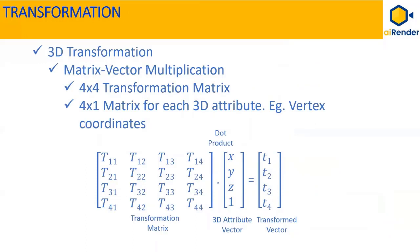A 3D transformation is essentially a matrix-to-vector multiplication. The transformation matrix is a 4×4 matrix. The vector contains a 3D attribute of a vertex of an object, for example, XYZ geometric coordinates. The vector is 4-dimensional, or can be considered as a 4×1 matrix for all practical purposes. The 3D transformation performs a dot product matrix-vector multiplication of the 4×4 transformation matrix with the 4×1 3D attribute vector to obtain a 4×1 transformed matrix. The same transformation is generally applied to all vertices of an object.